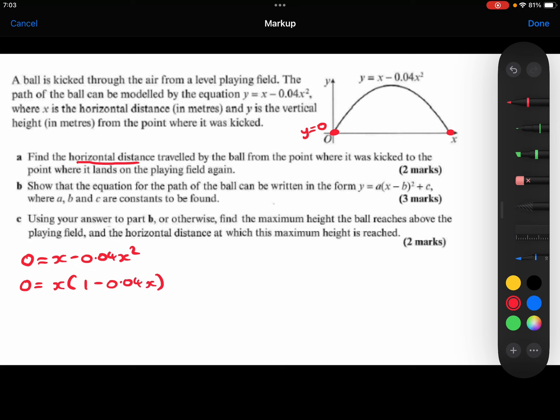And so I can now say that either the x is 0 from here, or I can say from here that 1 minus 0.04x is equal to 0, which would mean that 1 is equal to 0.04x. So x is equal to 1 divided by 0.04, which gives 25.